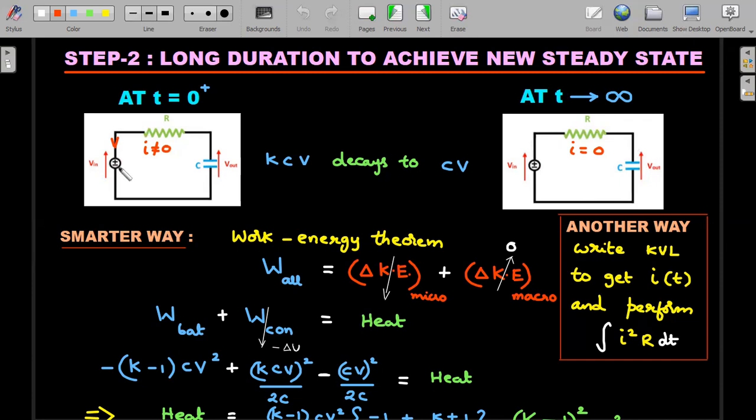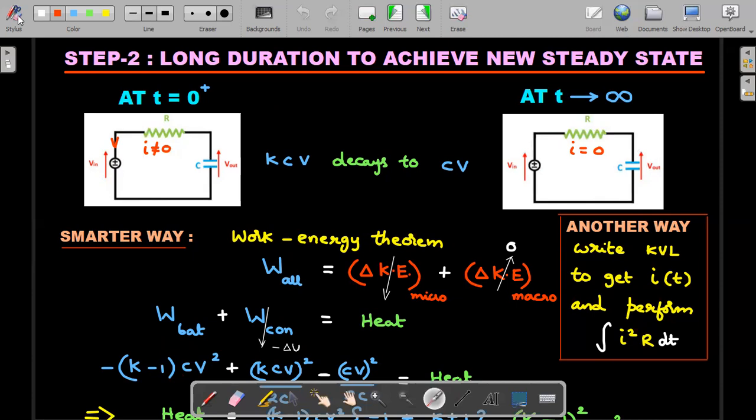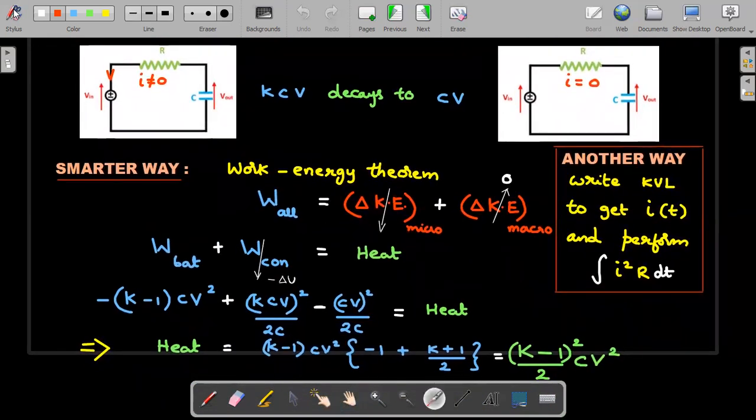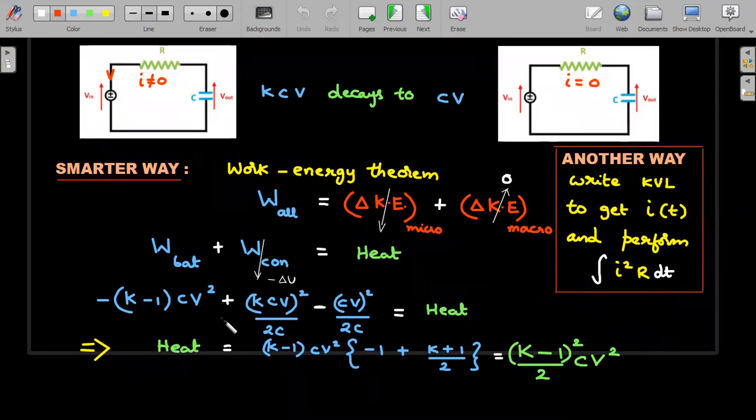Therefore work done by battery is minus the flown charge multiplied by V, which gives you this term. Minus delta U is the U initial of the capacitor minus U final of the capacitor, which I have written as Q squared by 2C. Q squared by 2C is the potential energy stored value of this, and I am subtracting initial and final because of the minus sign.